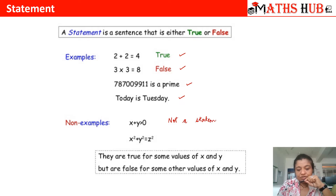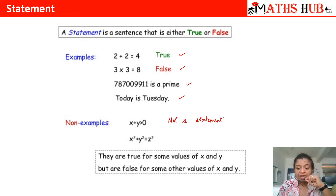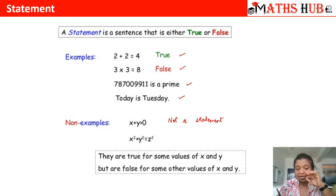Similarly, x squared plus y squared is equal to z squared. For the triplets which satisfy this relation, it is a true statement; otherwise it becomes false. So at the same time it can be true and false. This is again not a statement.